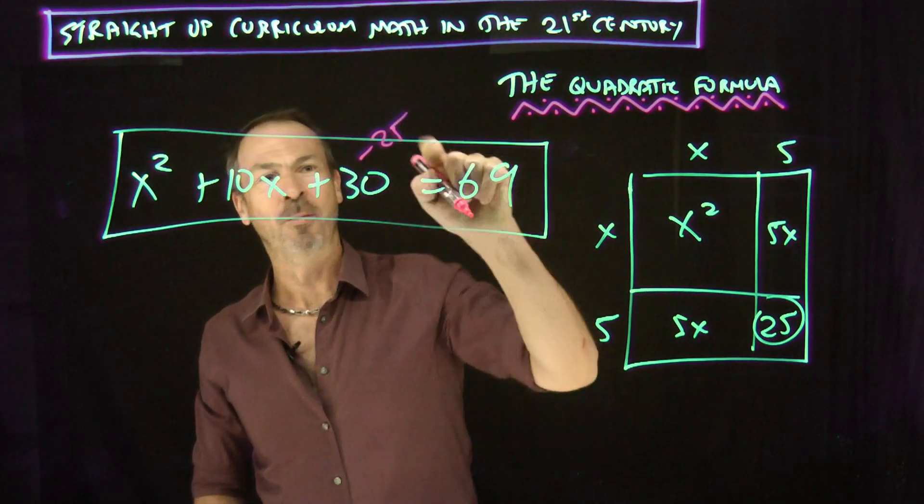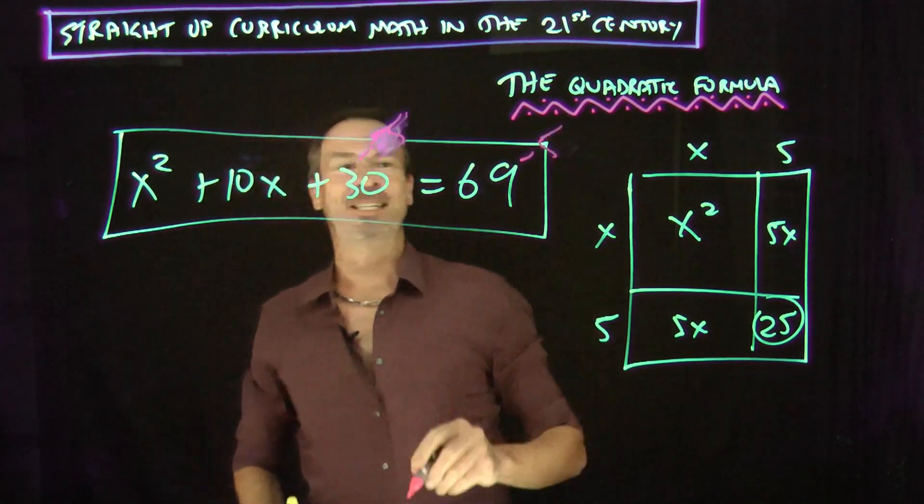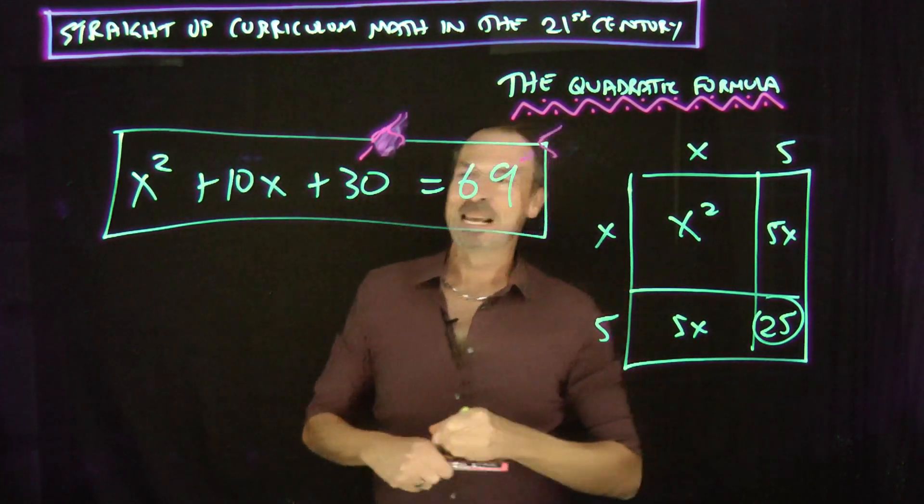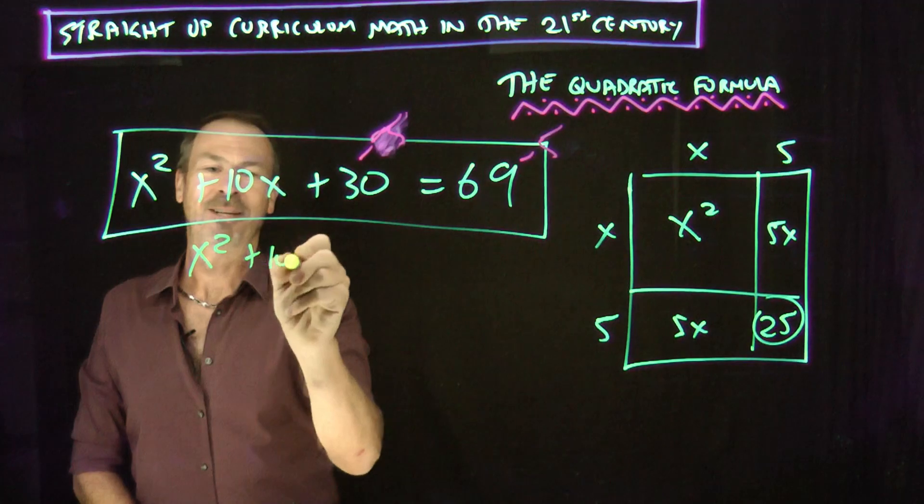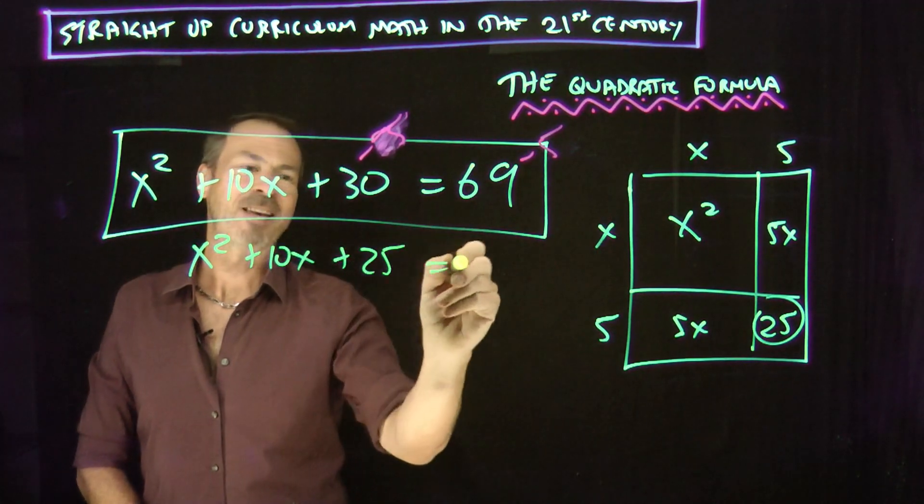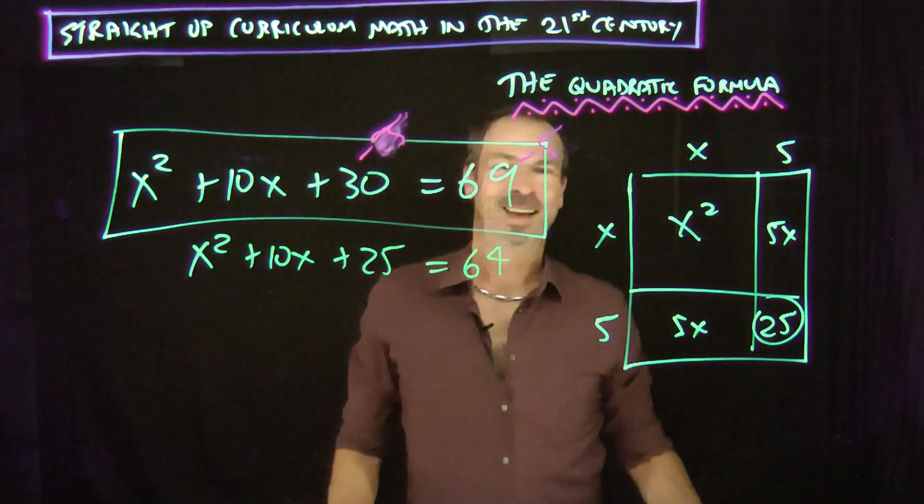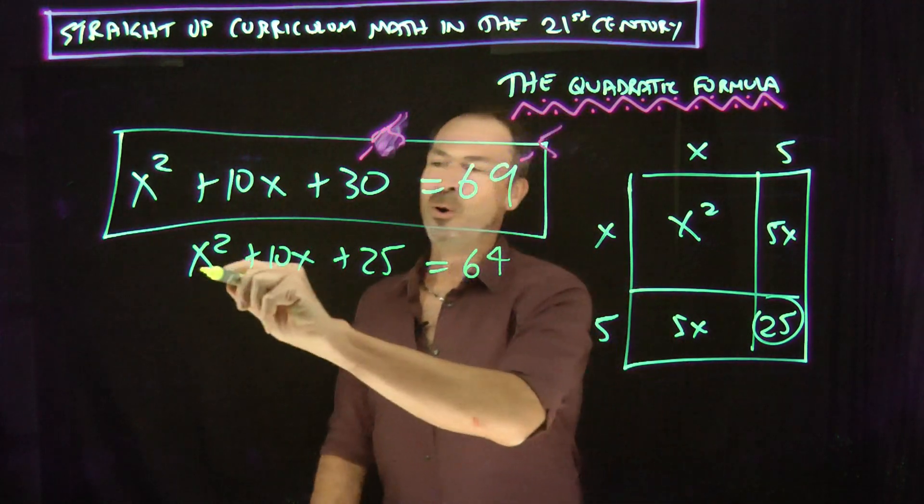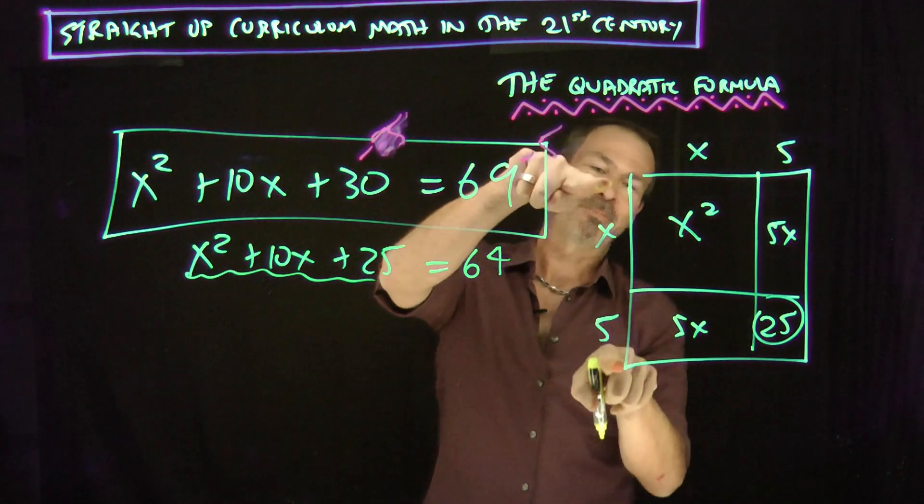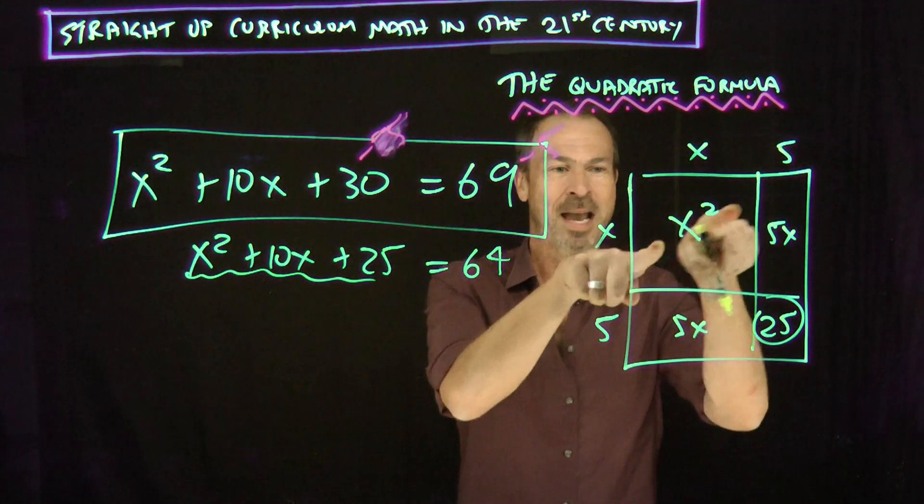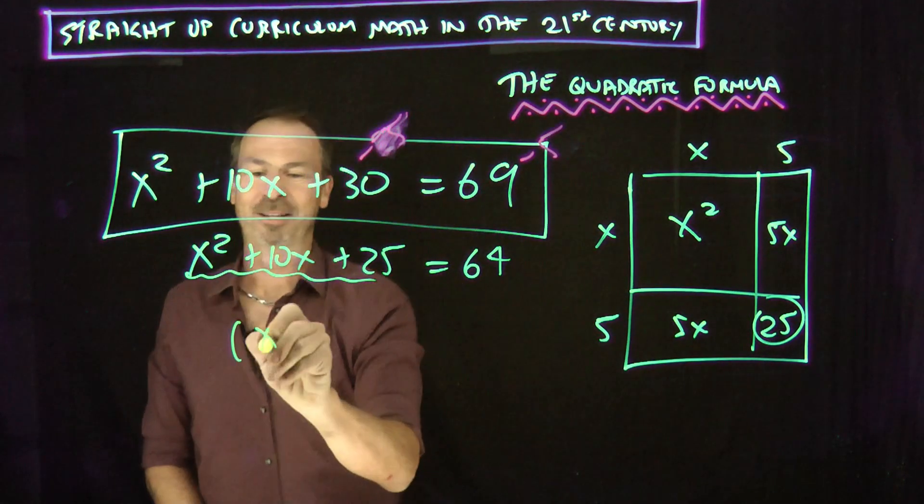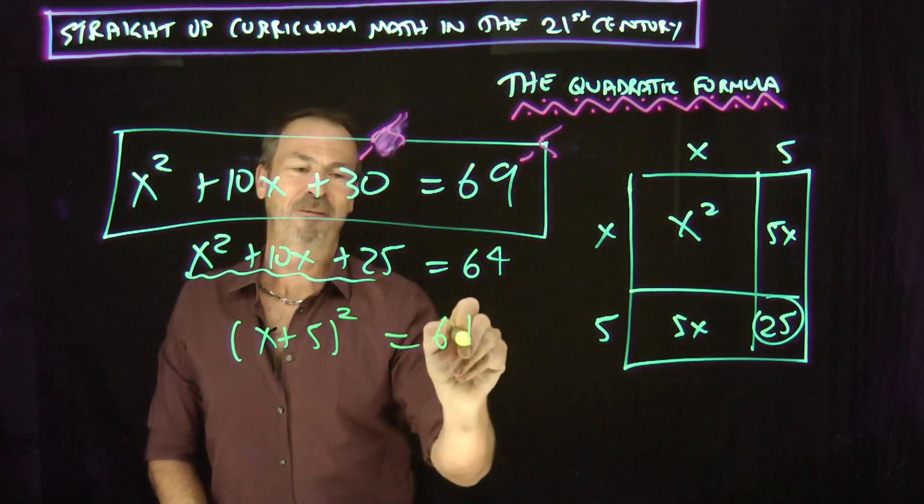Make 25 happen. Make it happen. Whoops. Take away 5. Take away 5. Deal with the consequences. So really this is x squared plus 10x plus 25 equals 64. And life is good. Because all this, what is that really? It's x plus 5 by x plus 5 as a square. There's all the pieces.